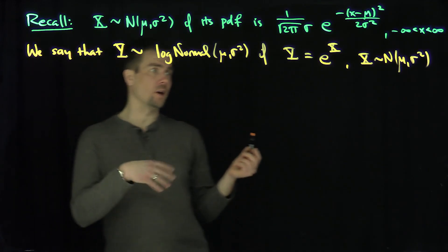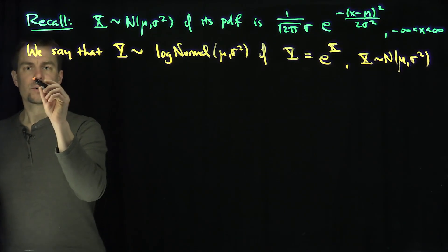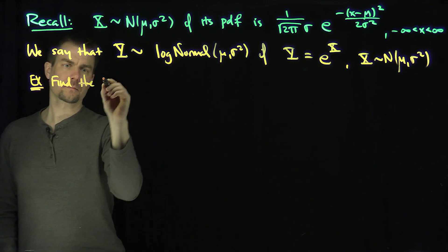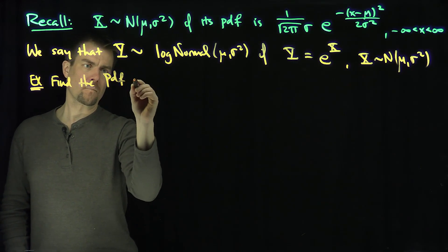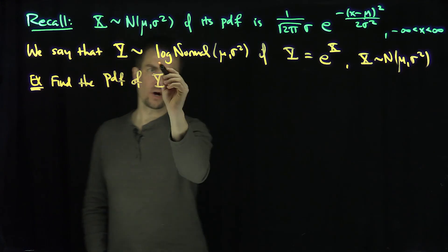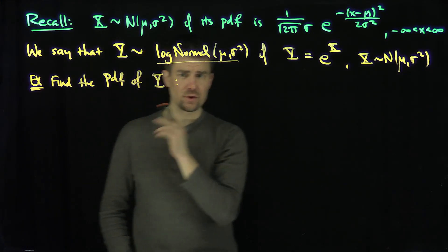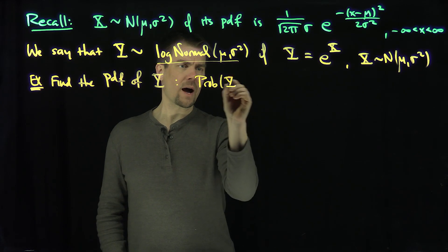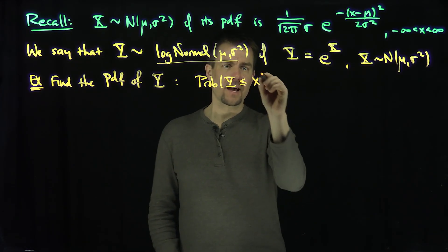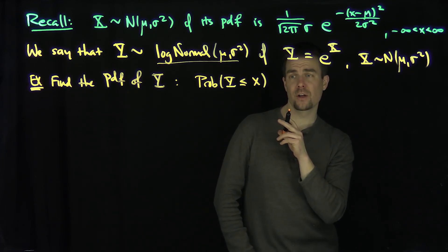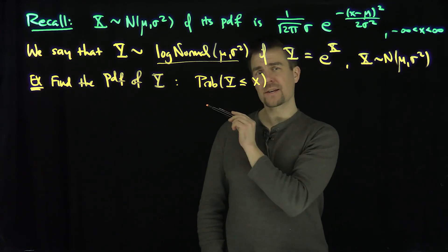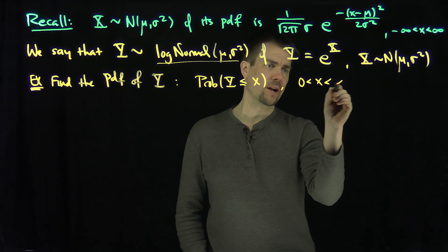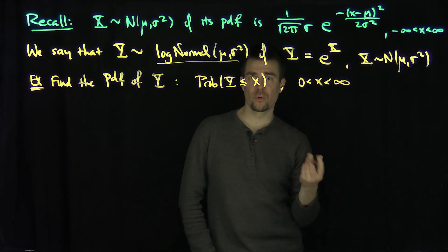Now I'd like to ask a couple of questions about these log-normal random variables. The first question: let's find the pdf of y if y is log-normally distributed. We do this in the standard way — it's a good example of change of coordinates. We look at the probability that y is less than or equal to x. Since y equals e to the x, y can never be negative, so we restrict ourselves to x greater than or equal to zero — that's the range of log-normal random variables. Exponentials map the entire real line onto the positive axis.